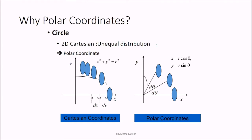Why do we need polar coordinates if Cartesian is available? In a circle, using 2D Cartesian gives unequal distribution — there will always be some dx distance, so it will not be properly shown. But if we use polar coordinates with angle theta, we take the point as r·cos(theta) and r·sin(theta) with respect to the angle, and then the coordinates will be accurate.